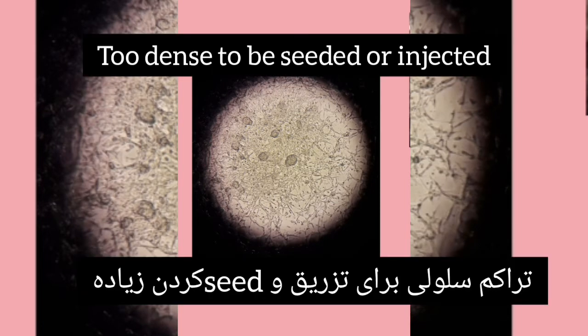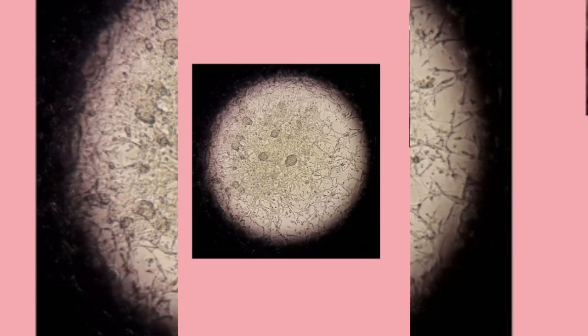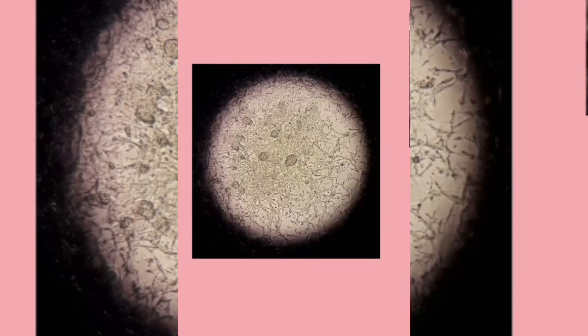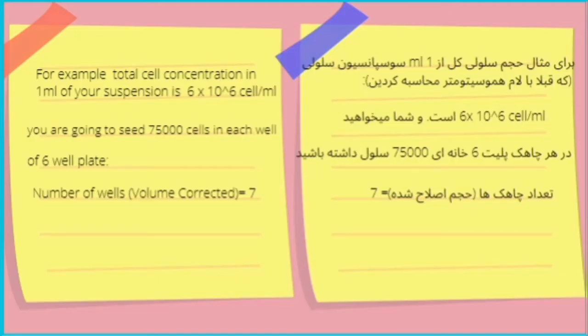You can't just transfer all cells you have in your culture flask to wells or your animal. Instead, by using a hemocytometer, you can easily count your cell numbers. In another video, I'm going to explain how to do that.